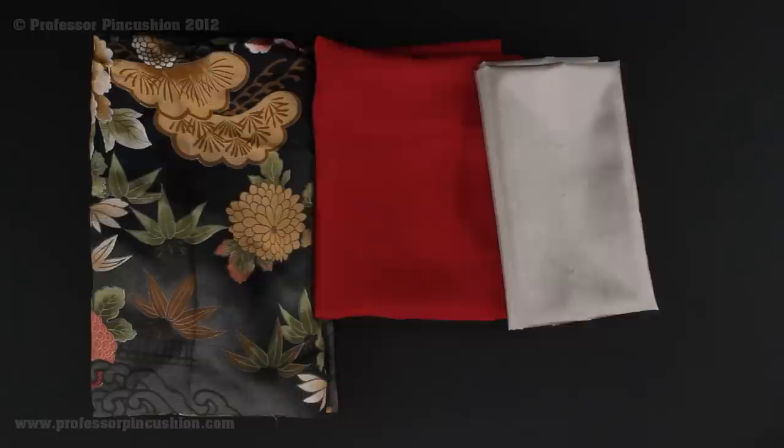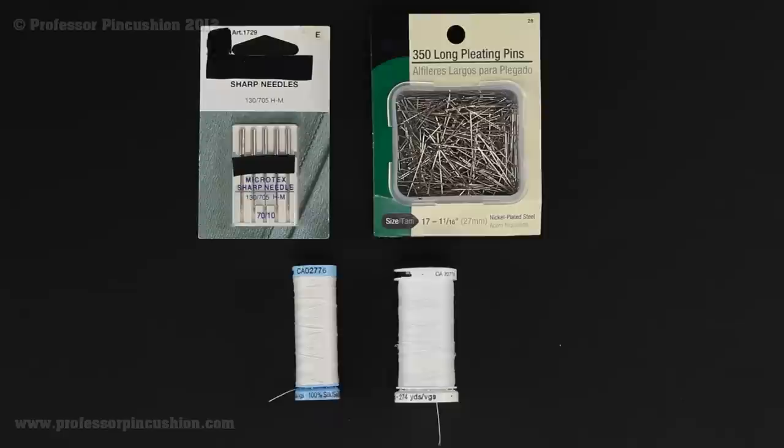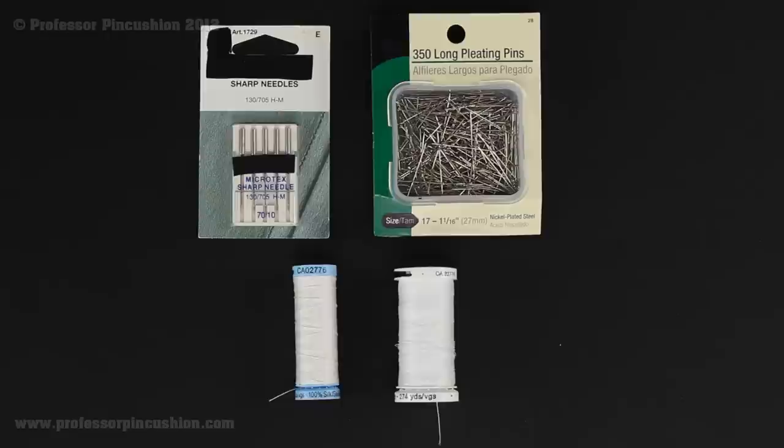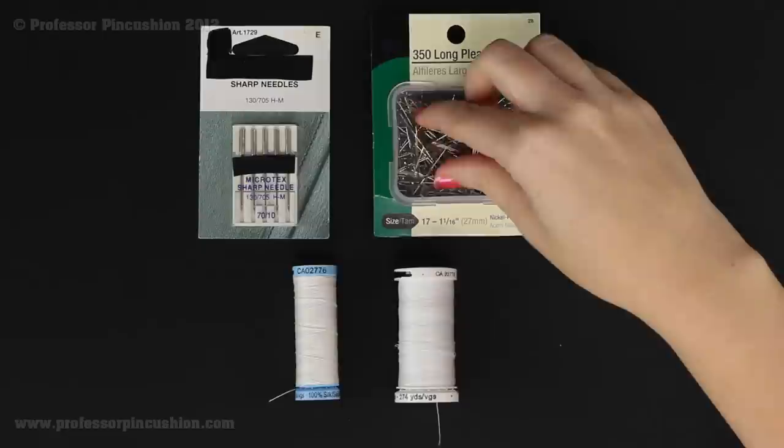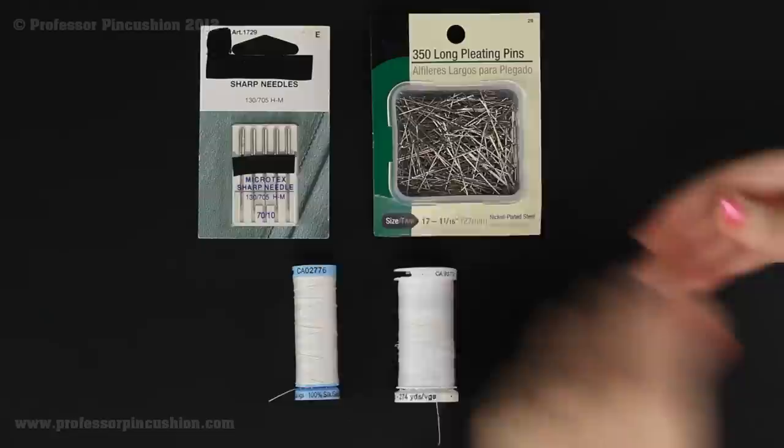So now we're going to get started on those tips and tricks and hopefully help you out in working with the silk and silk-like fabrics. The first thing we need to do is make sure we're working with the right equipment. Now normally when I'm using straight pins, I just use my regular ballpoint pins. Unfortunately, it's not fine enough and sharp enough. So you can either use silk pins or I like using these extra fine pleating pins.